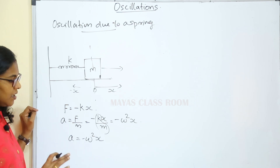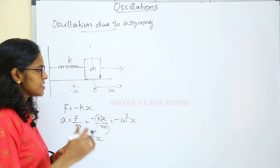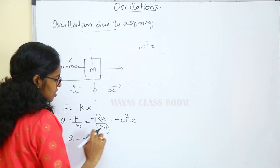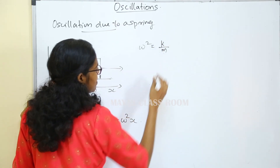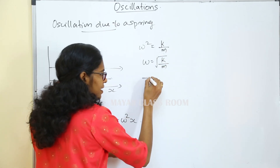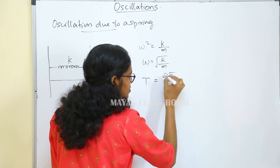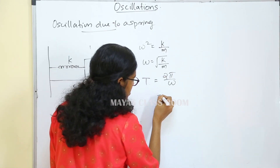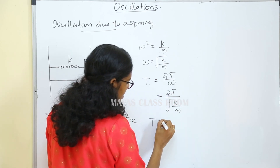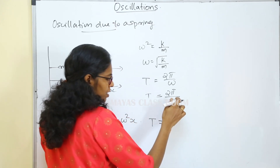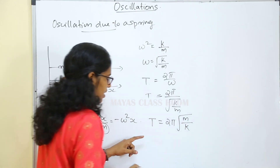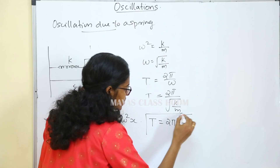Now we have to find the time period. The time period T is equal to 2pi divided by omega, where omega equals root of k by m. Therefore, time period T is equal to 2pi into root of m by k.